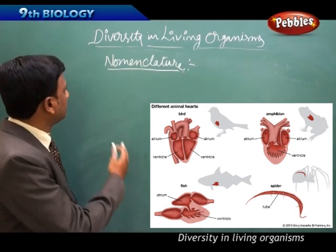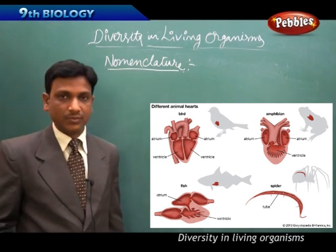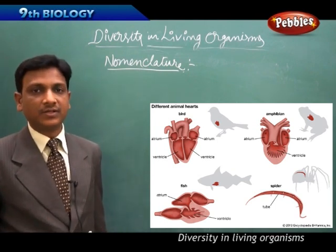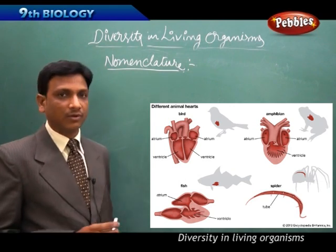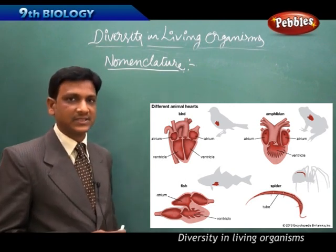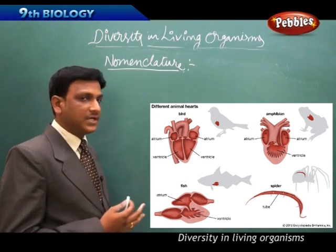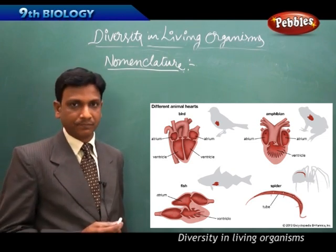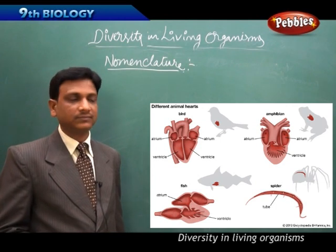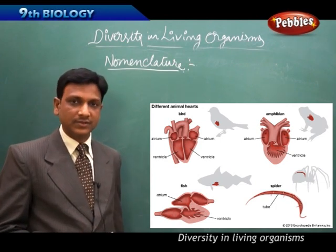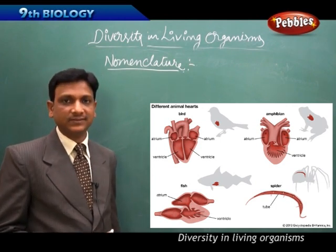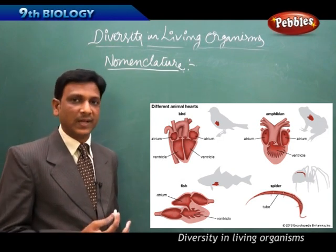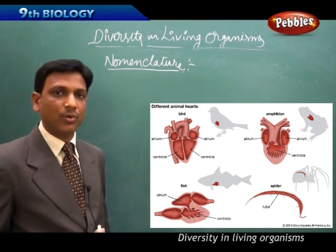Now we discuss nomenclature — the naming of organisms, both plants and animals. We need specific scientific names because people around the world use different languages and call organisms by different local names.